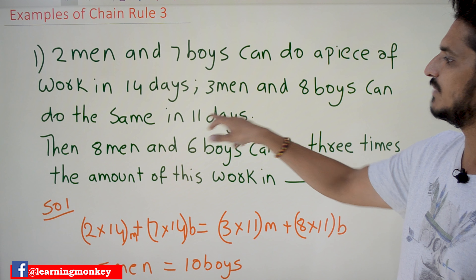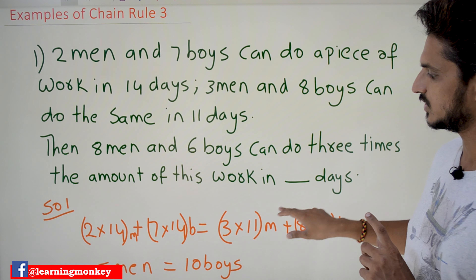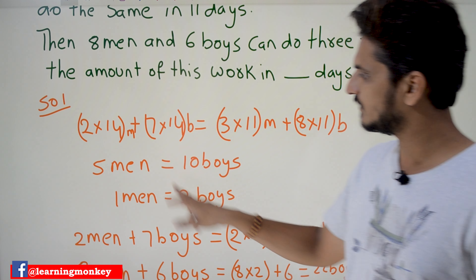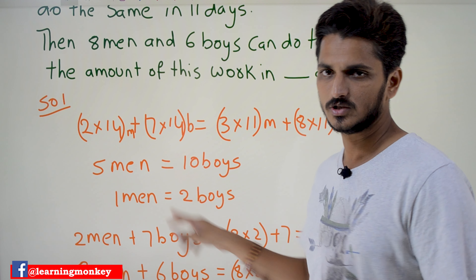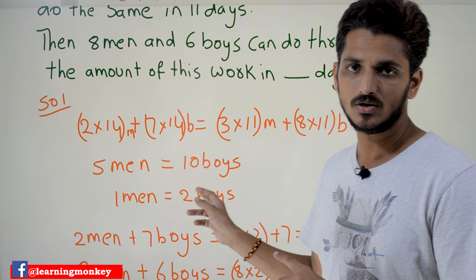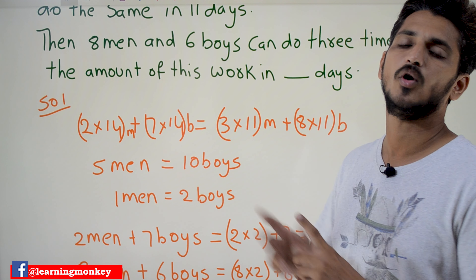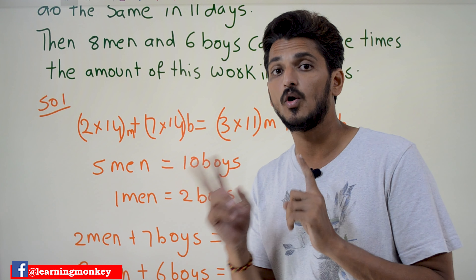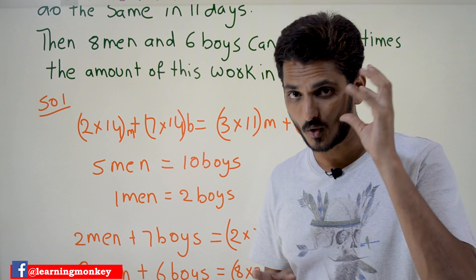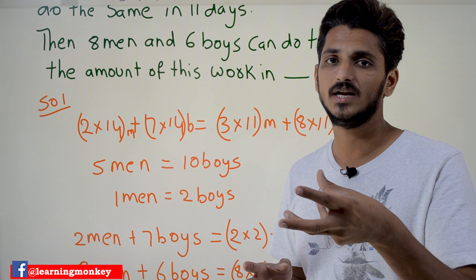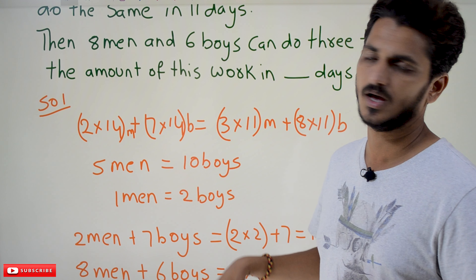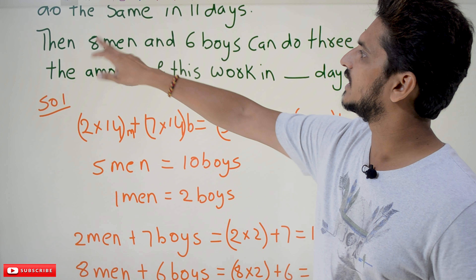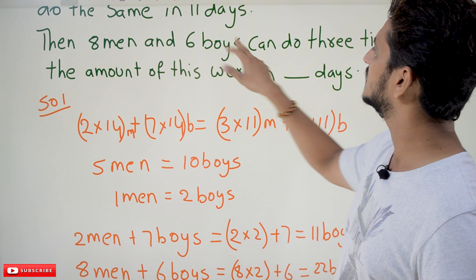From this equation, both sides are equal. Solving, we get: five men equals ten boys, therefore one man equals two boys. This is the key relationship we need to identify from the given statements.